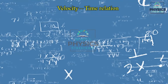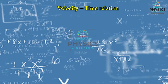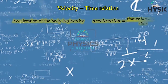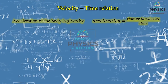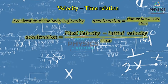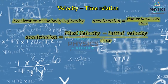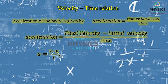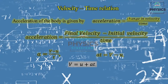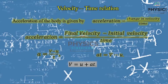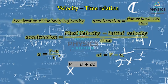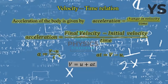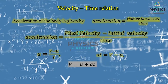First equation: velocity-time relation. We need to find the v-t relation. Acceleration of a body is given by change in velocity divided by time. Change in velocity means final velocity minus initial velocity divided by time. So, a = (v - u) / t. Therefore, at = v - u, and rearranging: v = u + at. This first equation is the velocity-time relation, applicable only for uniform accelerated motion.